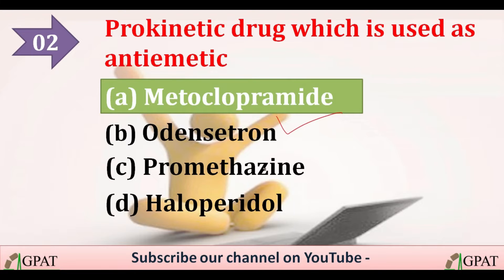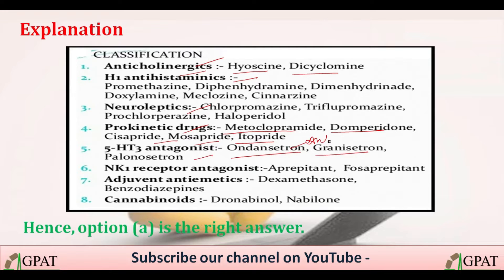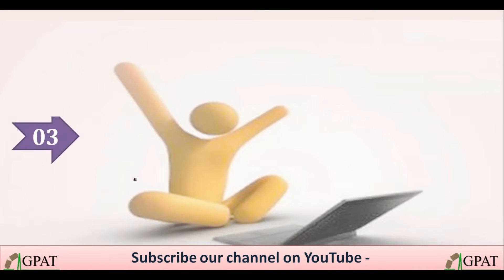The antiemetic classification includes: anticholinergics (hyoscine and dicyclomine), H1 antihistaminics, neuroleptics, and prokinetics — which include metoclopramide, domperidone, cisapride, mosapride, and itopramide. 5-HT3 antagonists such as ondansetron are used to prevent vomiting in anti-cancer therapy. Option A is the correct answer.